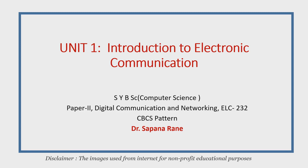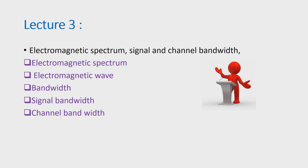Welcome to lecture 3 of unit 1 of paper 2, digital communication and networking. The name of the chapter is introduction to electronic communication. In lecture 3, we are going to learn about the concept of electromagnetic spectrum and signal and channel bandwidth.